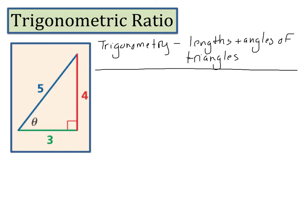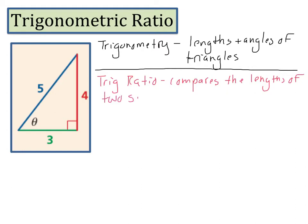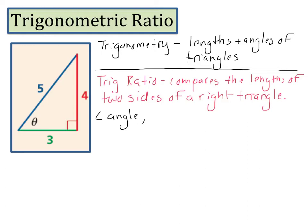In this first section we're going to talk about trigonometric ratios. A trigonometric ratio compares the lengths of two sides of a right triangle. Now usually when you've been talking about angles in the past, you use a different symbol. In this section we're going to use the symbol theta to describe acute angles.